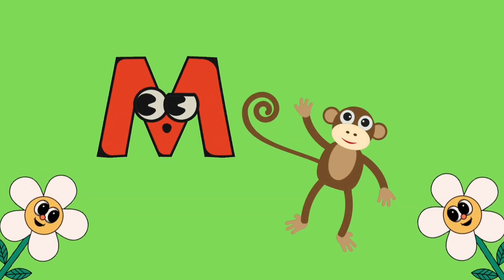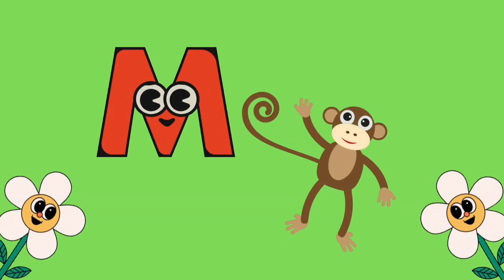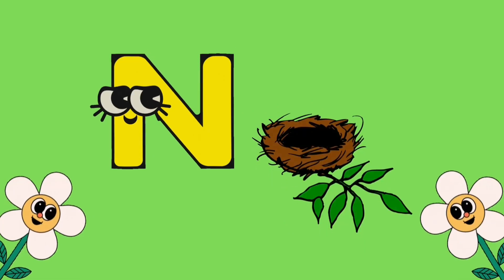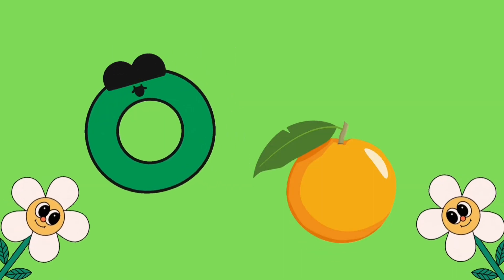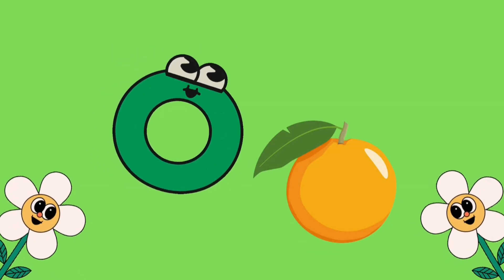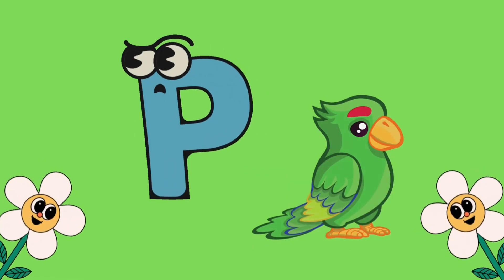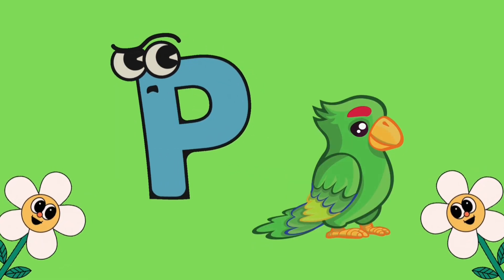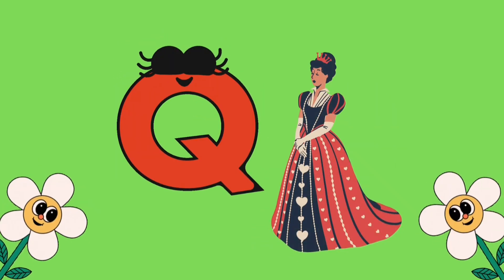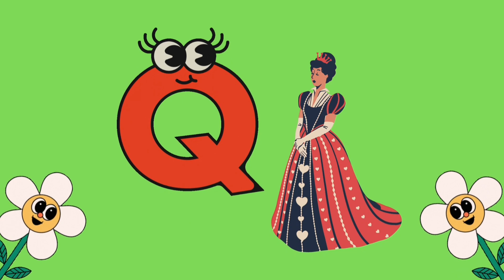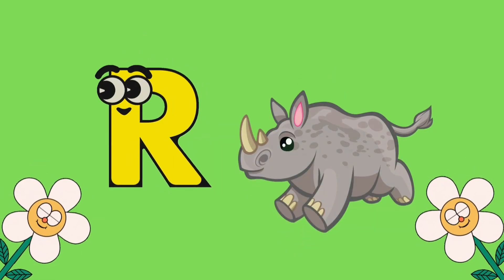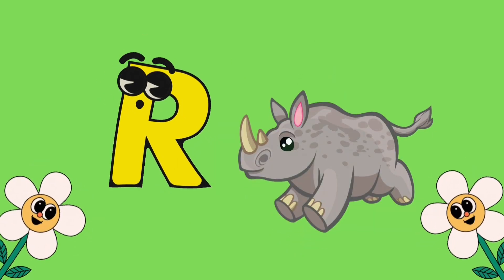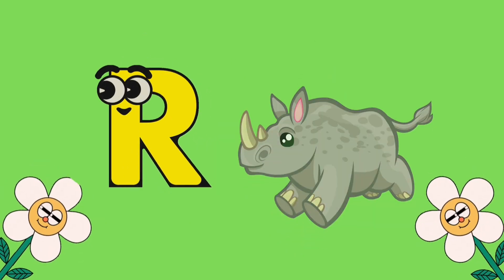K is for kangaroo, L is for ladybug, M is for monkey, N is for nest, O is for orange, P is for parrot, Q is for queen, R is for rhino.